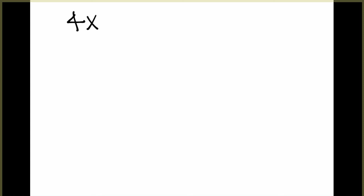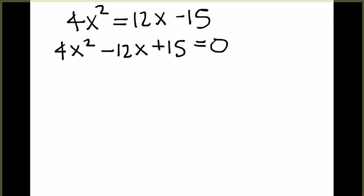The example we're going to look at today is 4x squared equals 12x minus 15. The first thing you need to make sure to do is set the equation equal to 0. In this case, I'm going to move everything to the left side of the equation just so that my a value remains positive. Now, looking at this equation, since it is equal to 0,